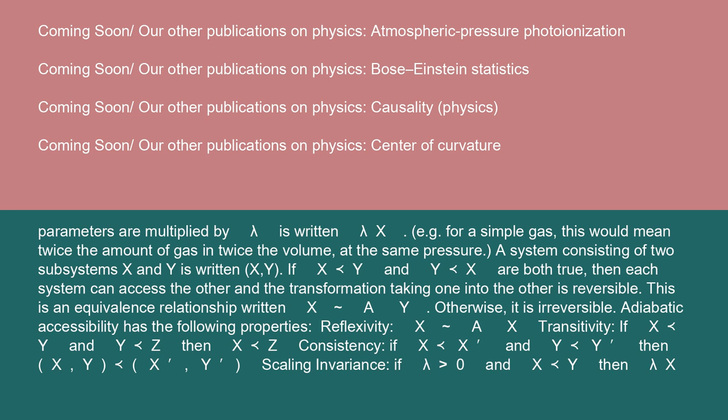Adiabatic accessibility has the following properties. Reflexivity: X tilde operator a X. Transitivity: If X precedes Y and Y precedes Z, then X precedes Z. Consistency: If X precedes X and Y precedes Y, then XY precedes XY. Scaling invariance: If lambda greater than 0 and X precedes Y, then lambda X precedes lambda Y.